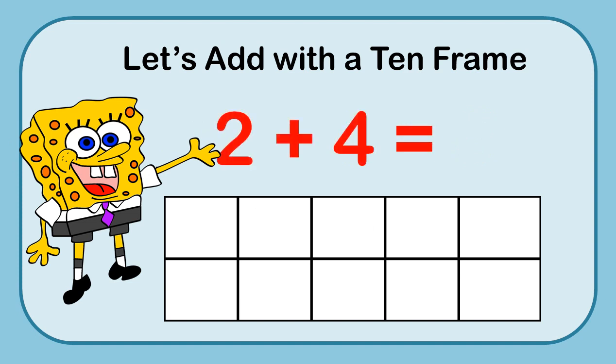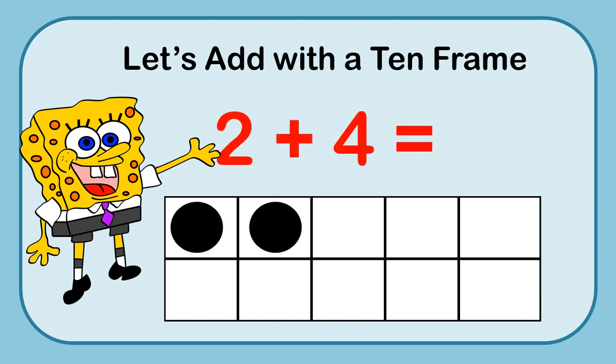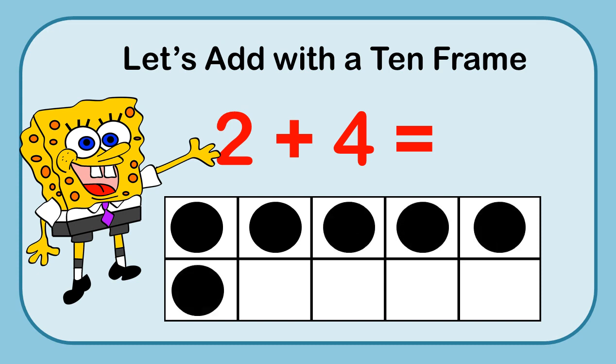2 plus 4. Let's go ahead and put 2 markers, and then 4 more: 1, 2, 3, 4. I already know that the first row has 5 in it, so I can see there's 5. Then 5 and 1 more counting on: 5, 6. So 2 plus 4 equals 6.